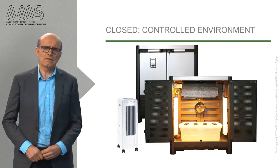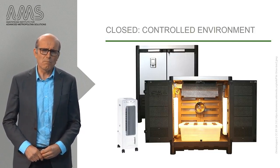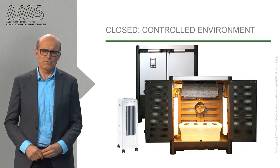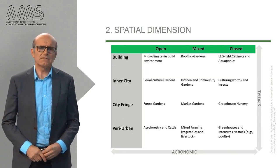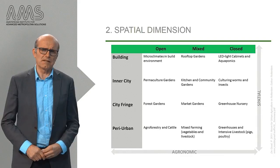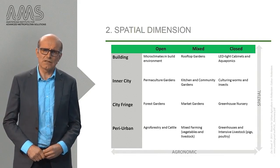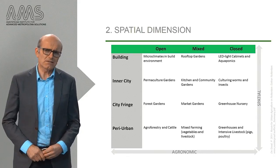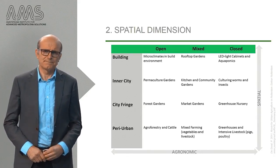As you can see, closed forms of urban food production are often more high-tech than open modes of food production. Secondly, there is the spatial dimension. Some urban food initiatives are to be found in or on top of urban buildings, while others are situated in peri-urban open land.